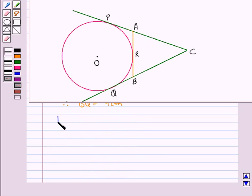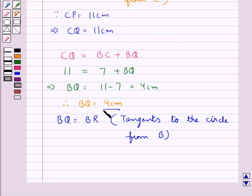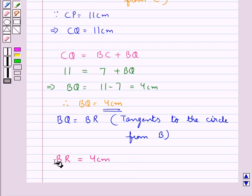Now BQ would be equal to BR as these are the tangents to the circle from point B, and we know that the length of the two tangents from an external point to the circle are equal. So BQ is equal to BR. Now as we have BQ is equal to 4 cm, we get BR is equal to 4 cm. This is our final answer.